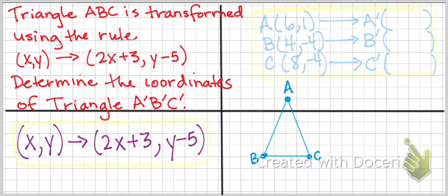Now if we look over here on the bottom left, I've written the rule again. So X, Y, our original X, Y is (6, 1). And then how is that going to change? This is saying that our new X is going to be 2 times our original X, so 2 times 6, plus 3.